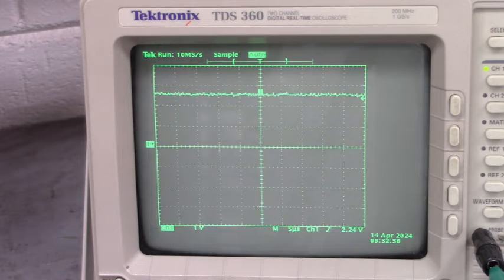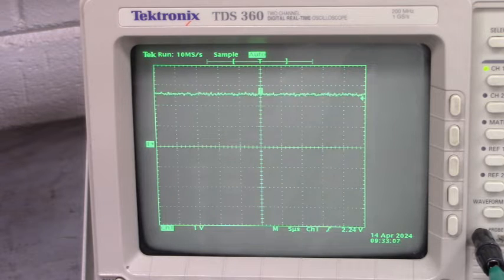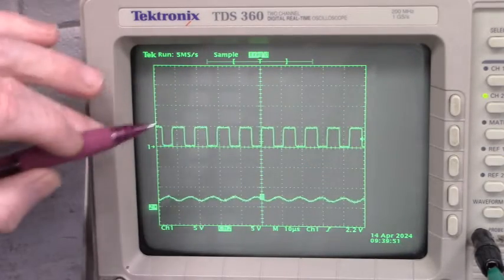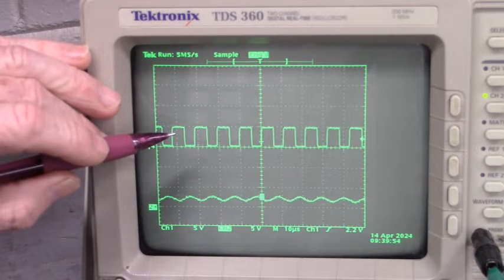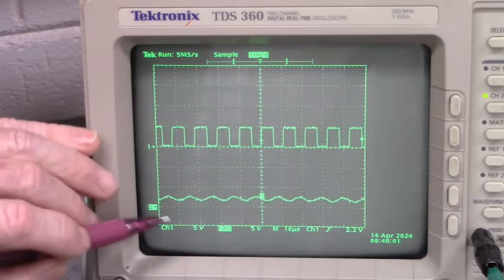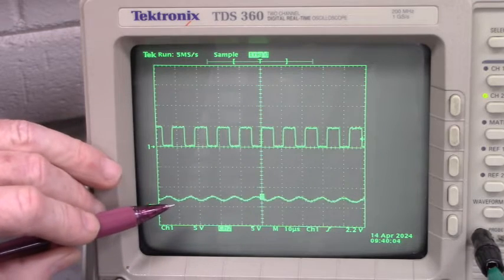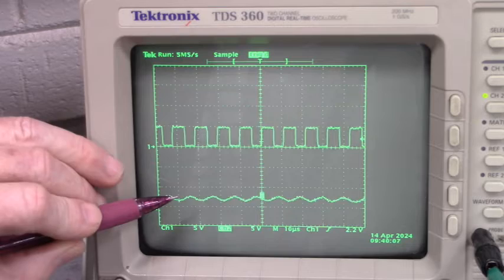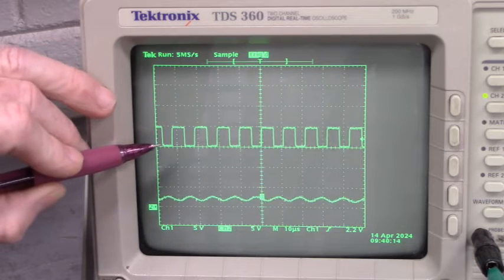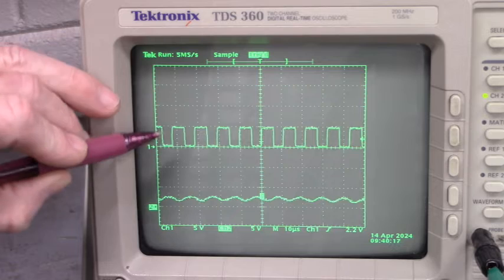Now we are going to look at the output of the function generator in relation to the output of the voltage comparator. Let me set the scope up so that we can do that. Channel 1 is looking at the output of the comparator. Channel 2 is looking at the sine input. Now we are going to set to 5 volts per division. Here is 0 to 5 for the sine input. You can see that it is right centered around 2.5 volts. And here the square wave is 0 to 5 volts.